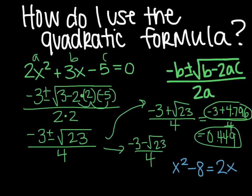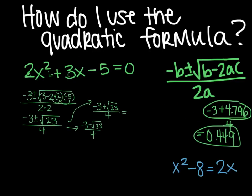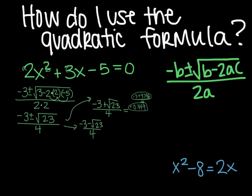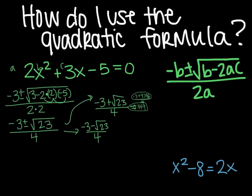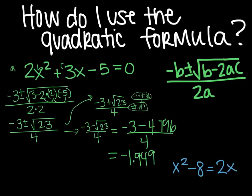You're going to follow the same process for when we have a second answer of the negative. So negative 3 minus the 4.796, all divided by 4. And that will give you an answer of negative 1.949. So those are your two answer solutions.